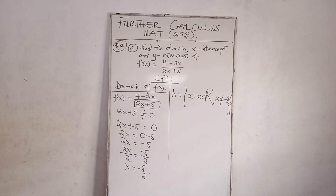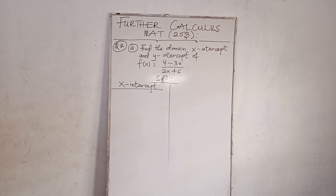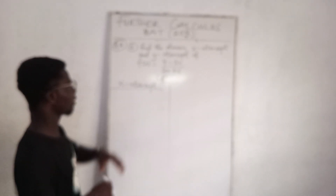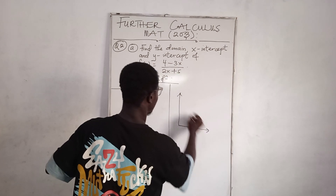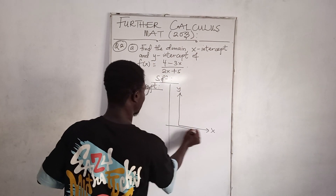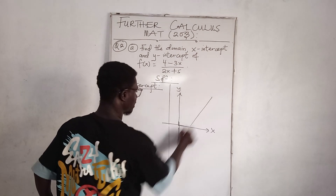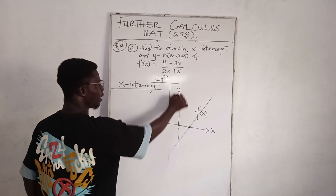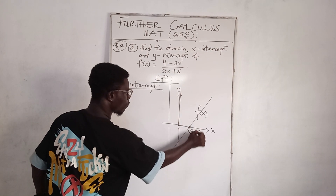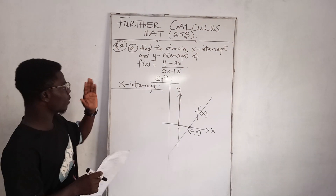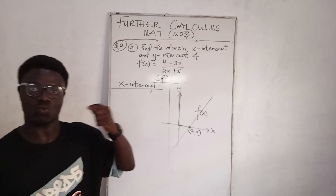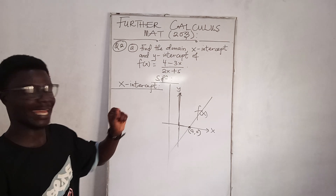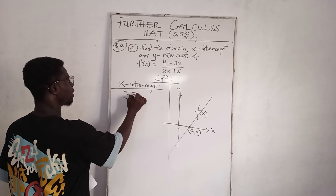Now let's find the x-intercept. The x-intercept refers to where this function cuts the x-axis. Where the function cuts the x-axis, the value of y is 0. So when finding the x-intercept, the value of y must equal 0 — the y-coordinate is always equal to 0 at the x-axis.